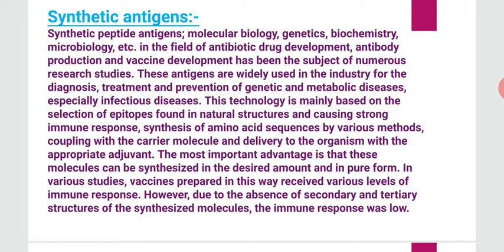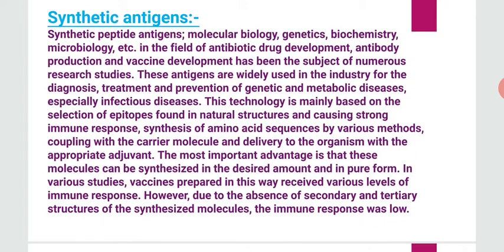If antibodies are found in the blood, it means the person has that disease. For prevention, the most common example is vaccination: in the lab we can create antigens with zero or minimal pathogenicity and use them as vaccines. This is how synthetic antigens help humans diagnose, treat, or prevent disease.